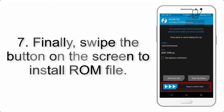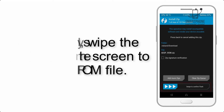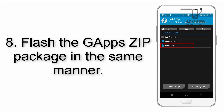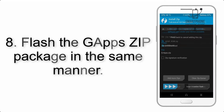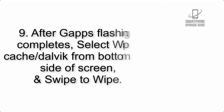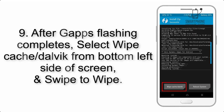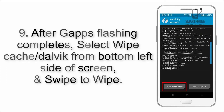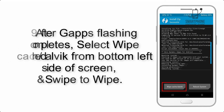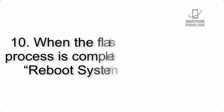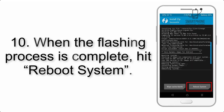Step 7: swipe the button on the screen to install the ROM file. Step 8: flash the GApps zip package in the same manner. Step 9: after GApps flashing completes, select Wipe Cache and Dalvik from the bottom left side of the screen and swipe to wipe.